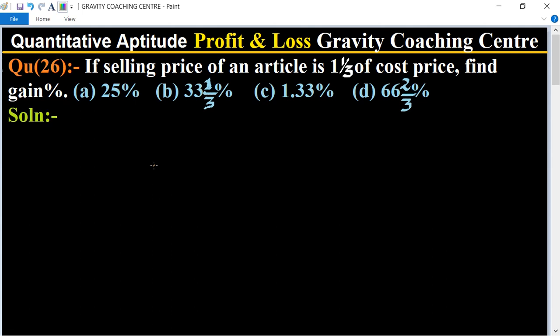Quantitative aptitude, chapter profit and loss, question number 26. If selling price of an article is one whole number one upon three of cost price, find gain percent. So in this question, the selling price of an article is one whole number one by three of cost price. So find the gain percent.